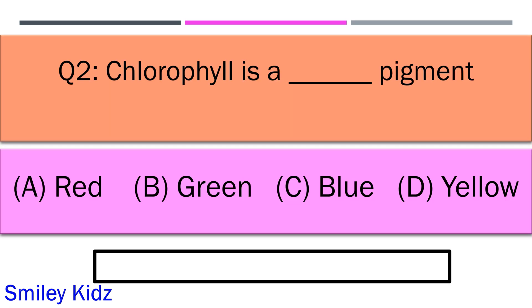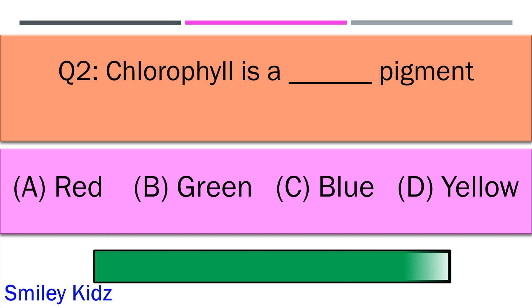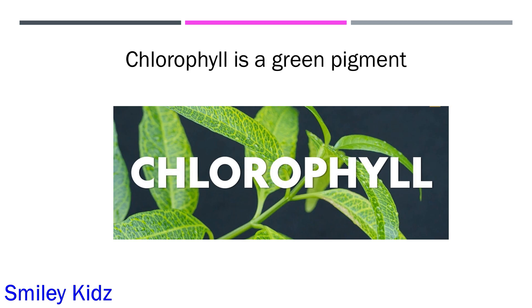Chlorophyll is a dash pigment. Option A red, option B green, option C blue, and option D yellow. Your time starts now. And your time is up and the right answer is option B green.